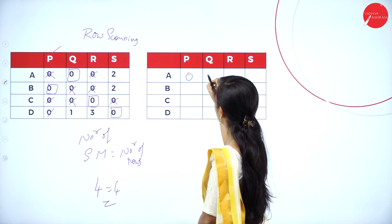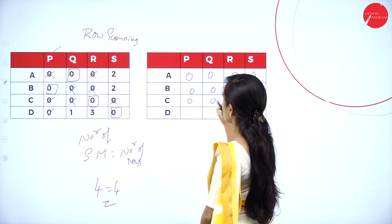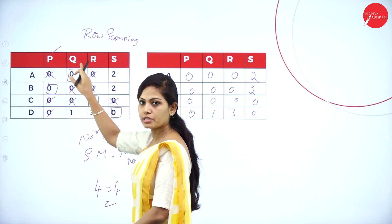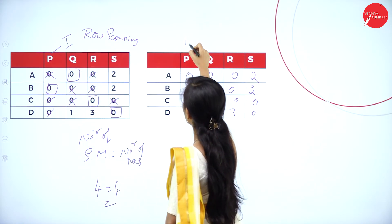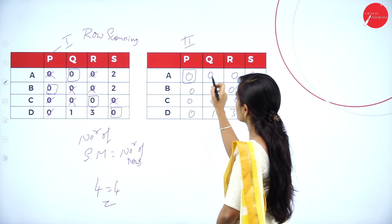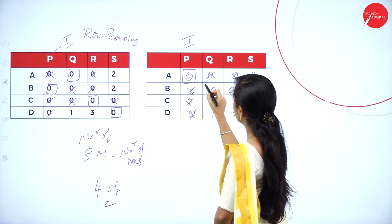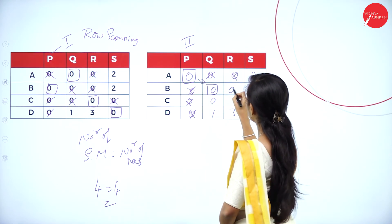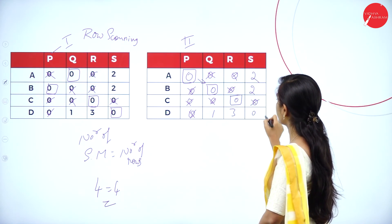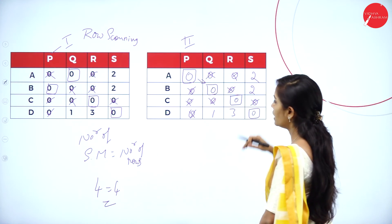If you want, you can also try other zero assignments — this gives alternative solutions. In the second alternative, assign a different first zero; cancel its row and column. Continue with diagonal selection for the remaining zeros. In the fourth row, there is only one zero remaining, so assign it. You can use diagonal selection for two alternatives.